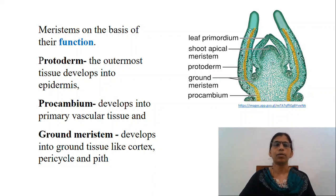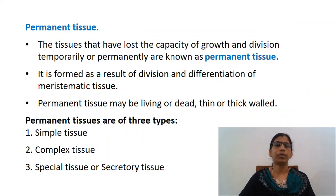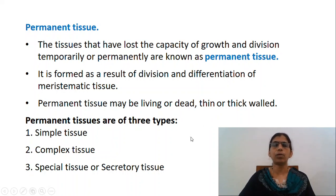In later stages, ground meristem cells become differentiated into hypodermis, cortex, endodermis, pericycle, pith, etc. Now let us move on to the next type, that is permanent tissues. The permanent tissues are those in which growth has stopped either completely or for the time being. Sometimes they again become meristematic partially or wholly. The cells of these tissues may be living or dead and thin-walled or thick-walled. The permanent tissues may be simple or complex.